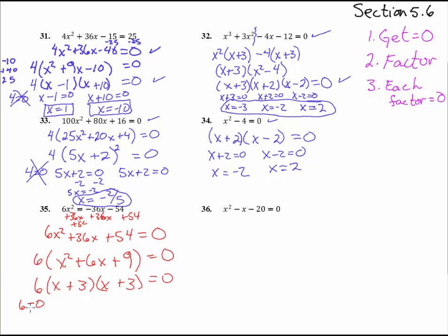Alright. Now set each one equal to 0. 6 equals 0. Well, that doesn't give us any answer. x + 3 equals 0. And x + 3 equals 0. Hey, those are the same thing. So when we get x equals a negative 3, that's going to give us the exact same thing. So we just get the one answer, negative 3.